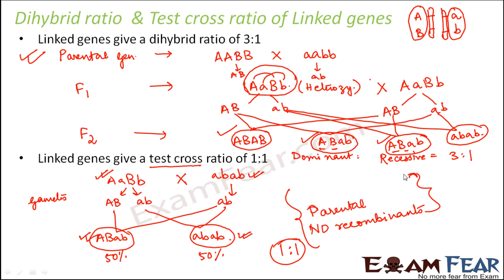If you talk about the first dihybrid cross also, there also if you see the phenotypes and in terms of the phenotypes it is all parental. The same parental phenotypes. However the genotype you get an additional genotype. That is AB, AB. So this is the additional genotype. But otherwise they are all the parental phenotypes.